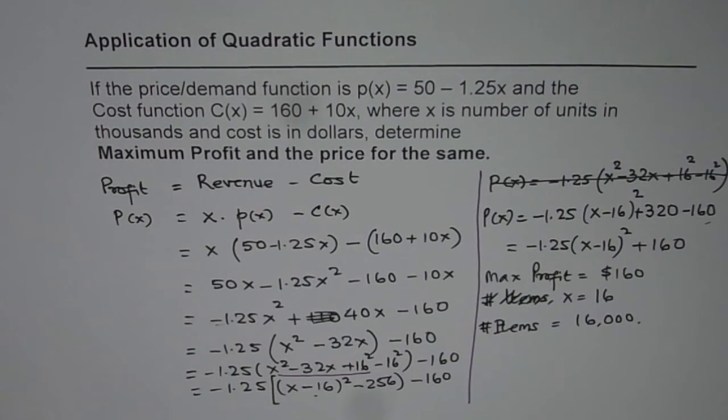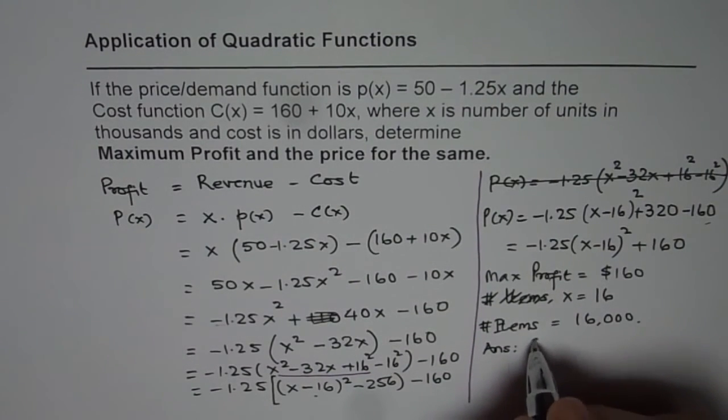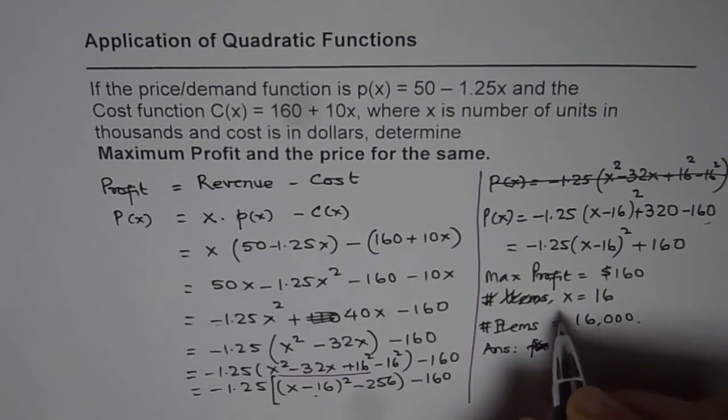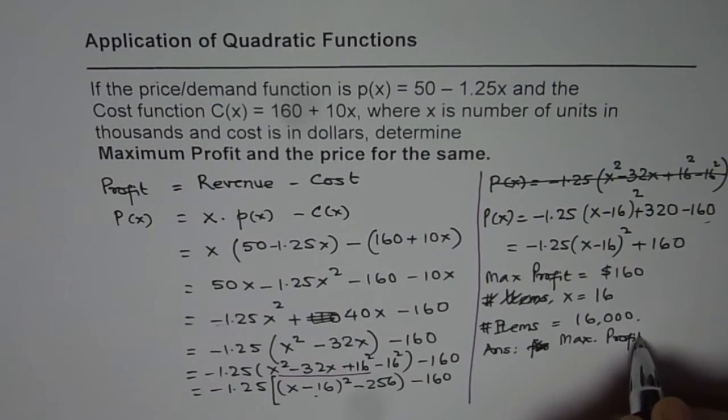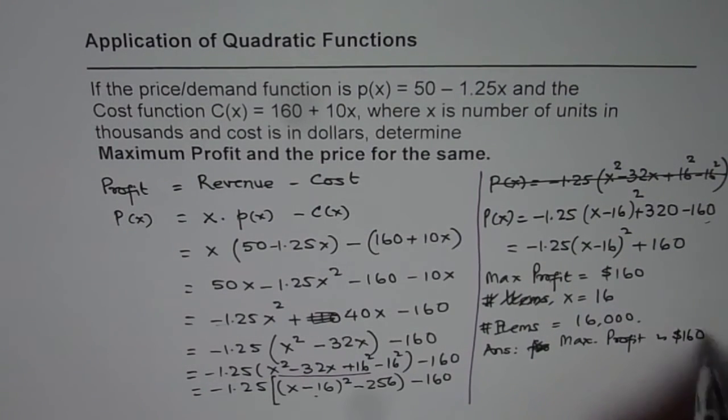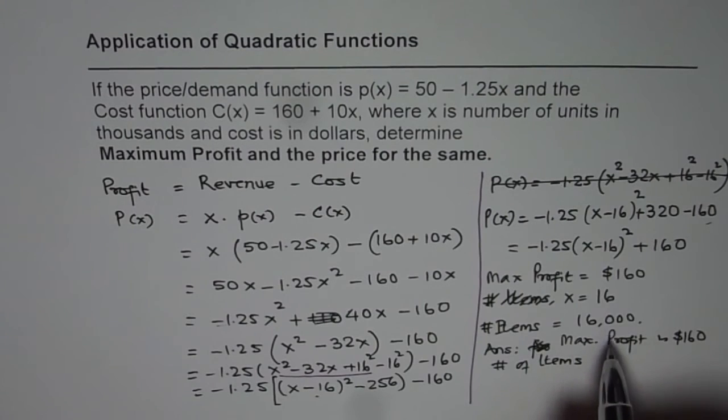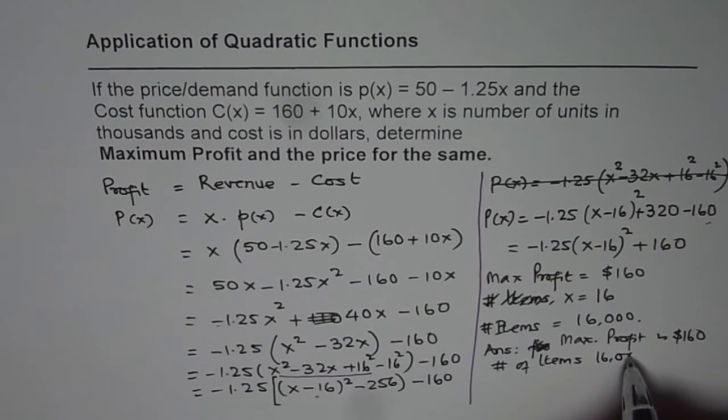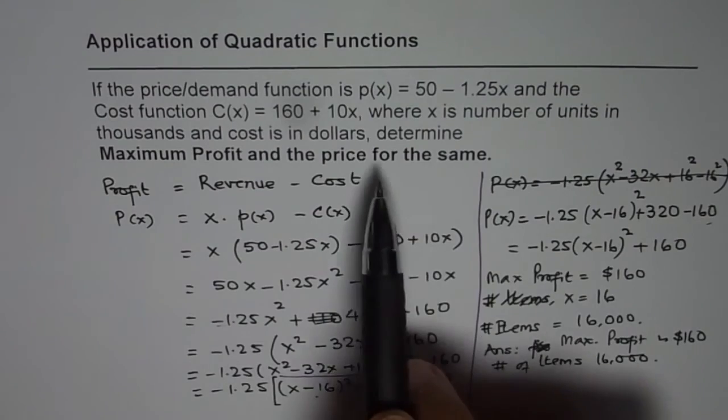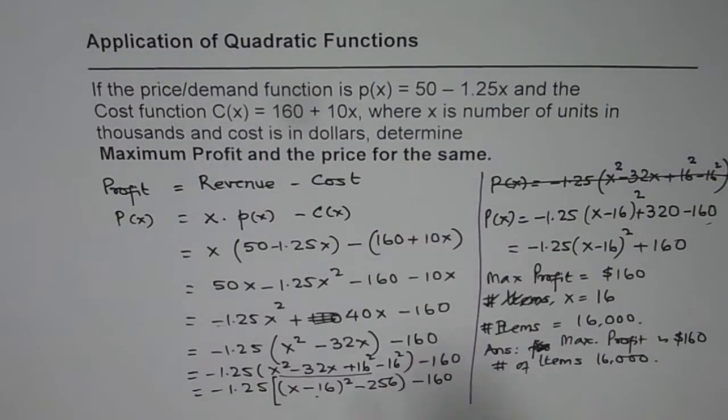So that is why it should be like this. So the answer is, the answer is that maximum profit is $160. And number of items, so price, number of items will be 16,000. Now the question actually is price for the same item, right? So we have to replace x with 16 in this question.